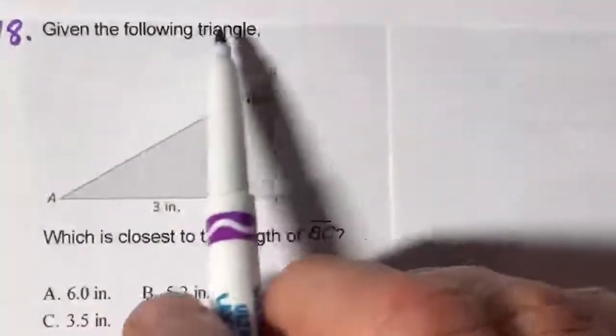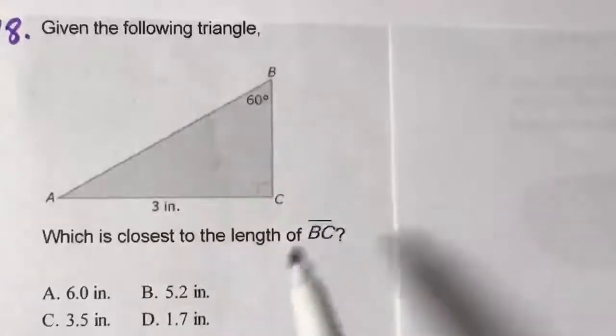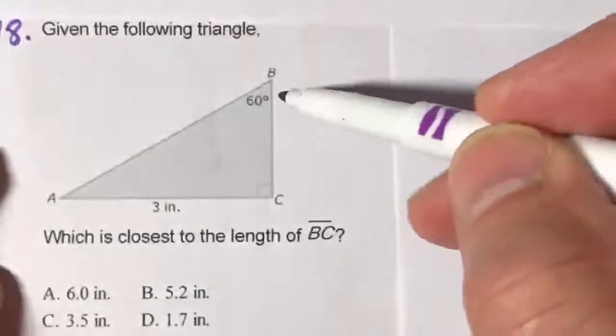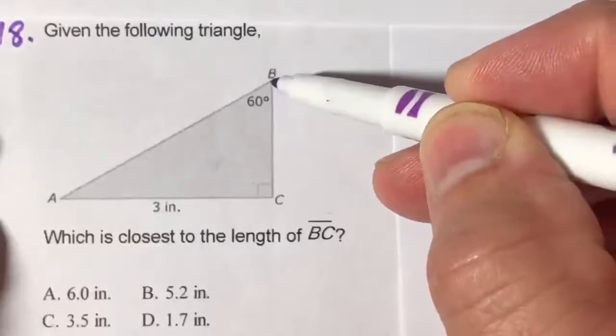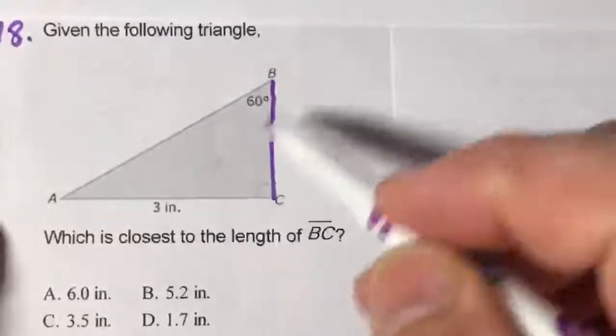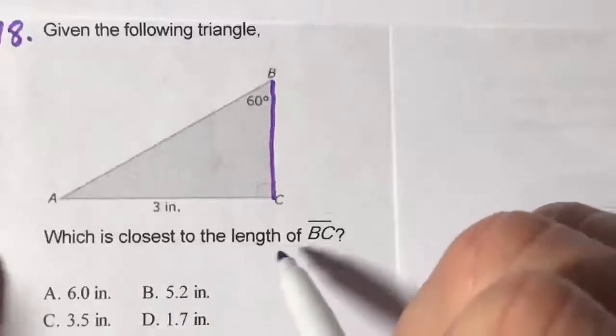Number 18: Given the following triangle, which is closest to the length of BC? Well, the first thing you want to do is locate BC and see if there's anything on it. Nothing, not even a letter.